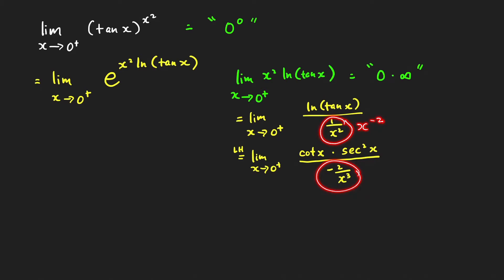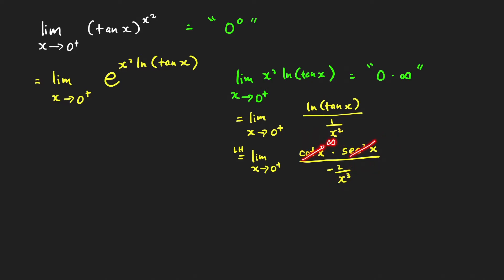What is the form of this limit? The denominator goes to negative infinity, secant of 0 equals 1, but cotangent x approaches infinity because it is cosine x over sine x — the denominator approaches 0 from the right. So cotangent x approaches infinity, secant squared x approaches 1, and the denominator approaches negative infinity. This gives the form infinity over infinity, another indeterminate form. Before applying L'Hôpital's rule again, try to simplify the expression.